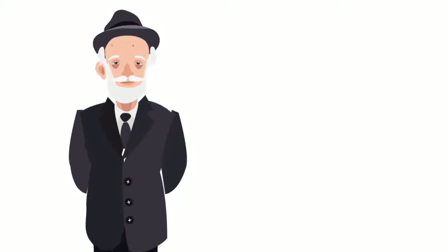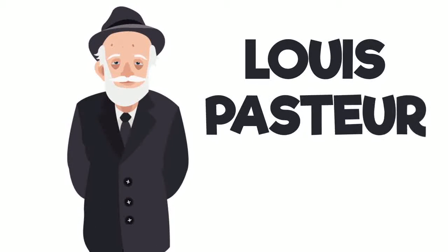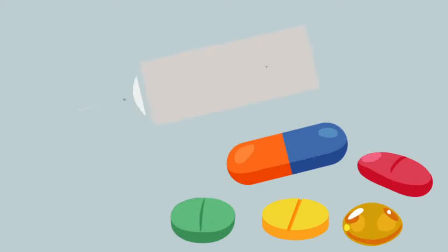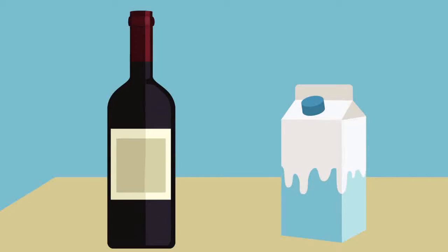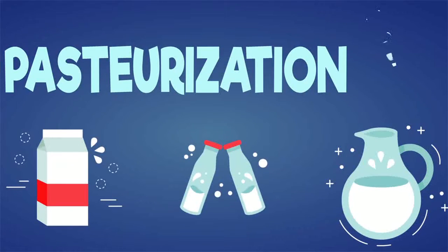Louis Pasteur was one of the most important founders of medical microbiology. He created the first vaccines for rabies and anthrax. He is known for inventing a method to treat milk and wine in order to prevent it from causing sickness. This process is called pasteurization.